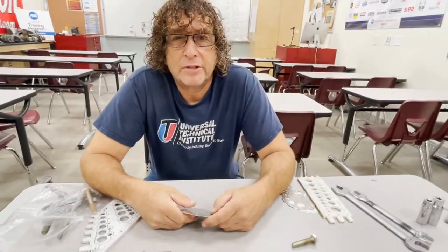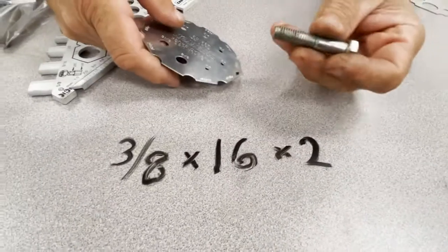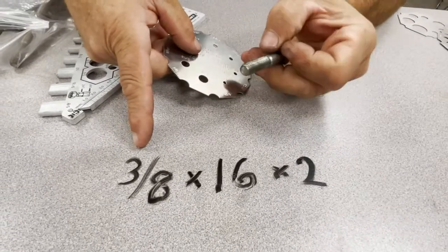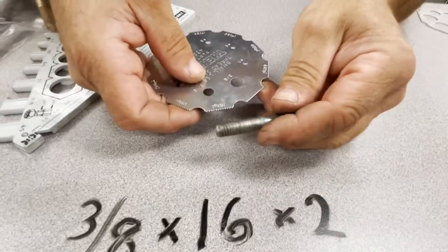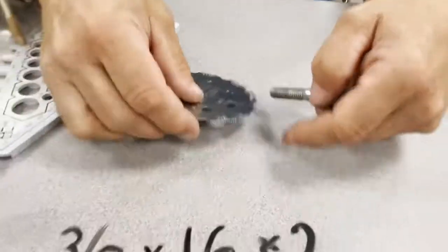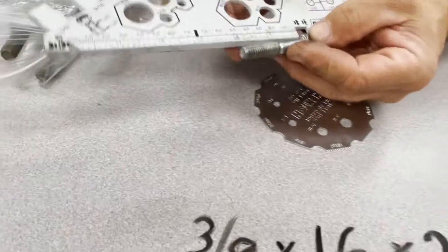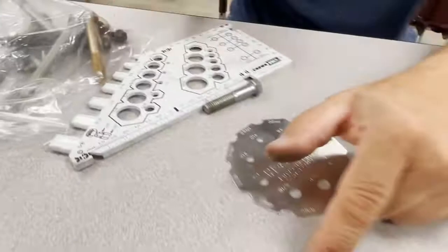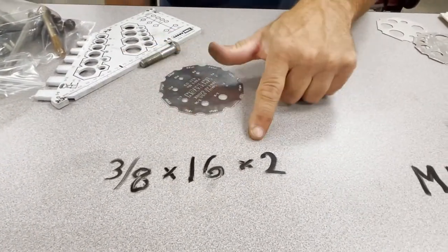Just to bring it all together — here's a standard size bolt. It fits the three-eighths hole, so the first number I write down is the diameter: three-eighths. The next number is the thread pitch: 16 threads per inch. The last number is the length: 2 inches. So when you go to the store, you ask for a three-eighths, 16 by 2 inch bolt.